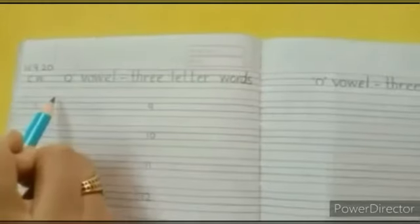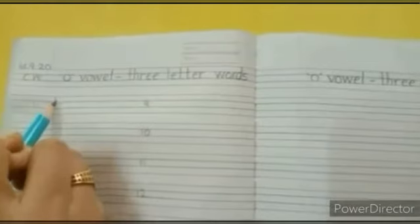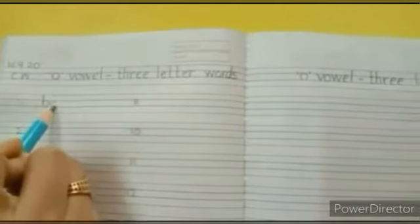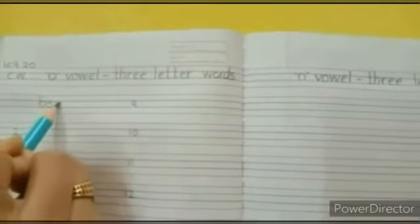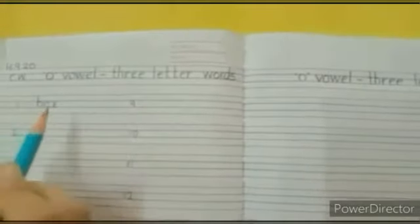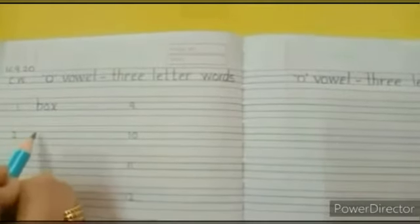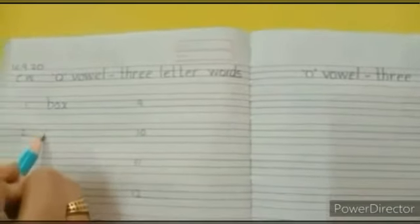Now we will start writing the words. So our first word is box. So write box. Now next word is cot. So in front of number 2 write cot.